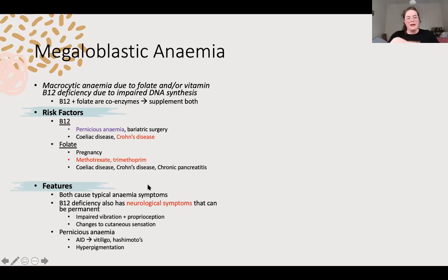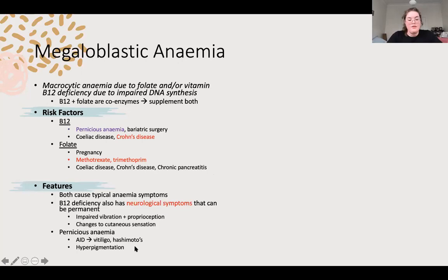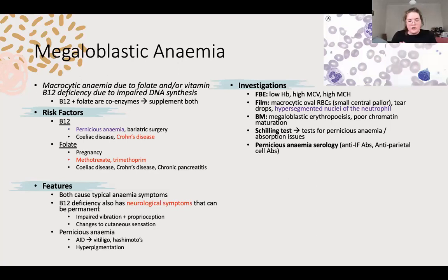Main features: both cause anaemia. B12 also produces neurological symptoms - the main one to ask about is any changes in sensation to hands or feet. If they've got pernicious anaemia it's associated with some autoimmune things including skin changes. Your investigations: macrocytic anaemia on FBE. Blood film looks nice and juicy, and the neutrophil has lots of lobes - should usually have about three, but here it's hypersegmented, which is diagnostic of megaloblastic anaemia.